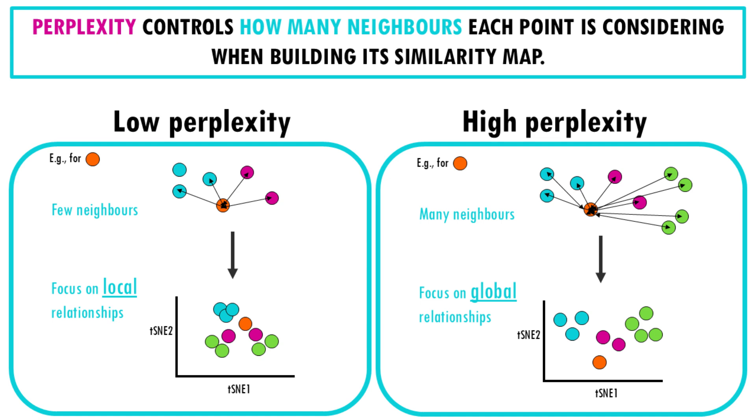When we set perplexity to a high value, the algorithm starts to consider a large number of neighboring cells when calculating similarity. This makes it better at capturing global relationships, like how different cell types, for example neurons, epithelial cells, immune cells, are distributed across the dataset. The individual clusters of cells might be less tightly packed, but the overall arrangement of cell types is probably clearer.